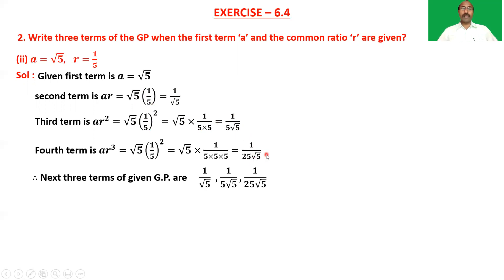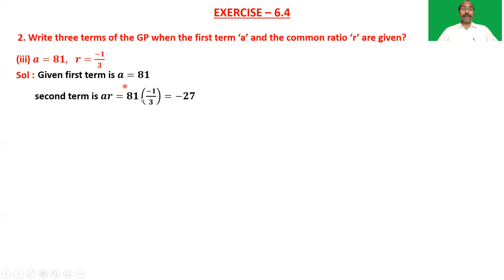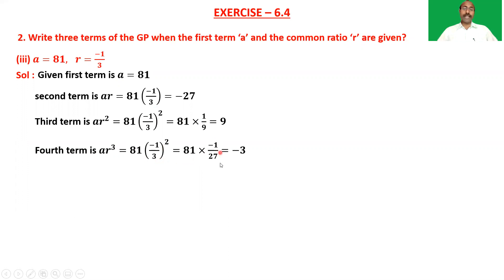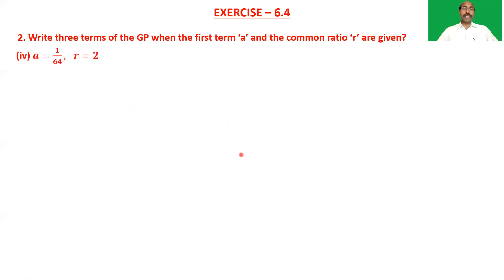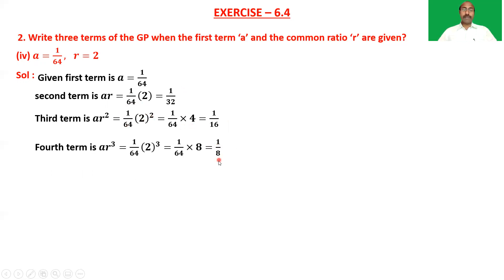For a = 81, r = −1/3: the second term is 81 × (−1/3) = −27, the third term is 81 × (1/9) = 9, and the fourth term is 81 × (−1/27) = −3. So the next three terms are −27, 9, and −3. For a = 1/64, r = 2: the second term is 1/64 × 2 = 1/32, the third term is 1/64 × 4 = 1/16, and the fourth term is 1/8. So the next three terms are 1/32, 1/16, and 1/8.